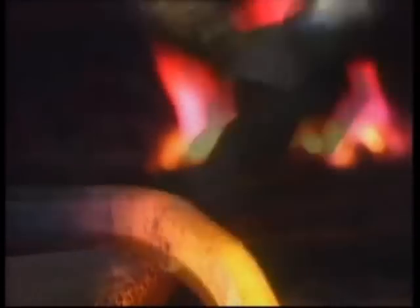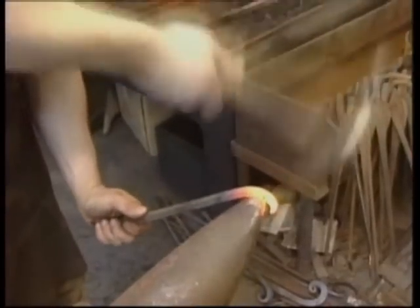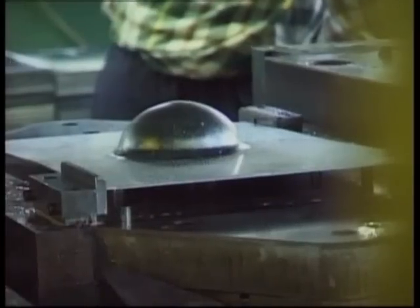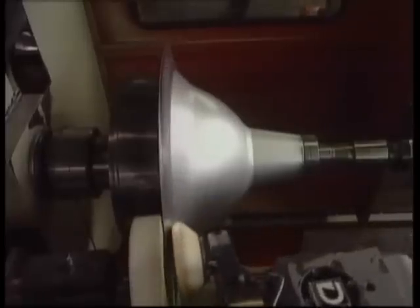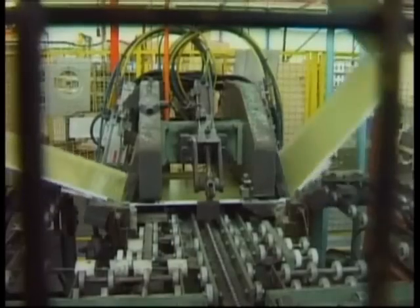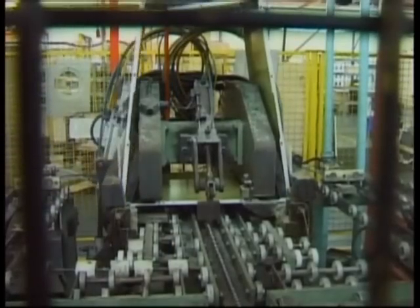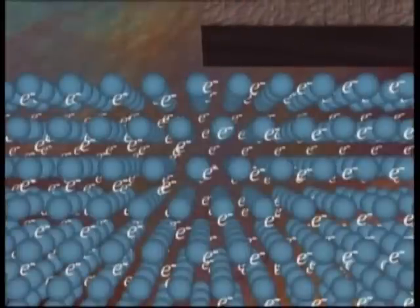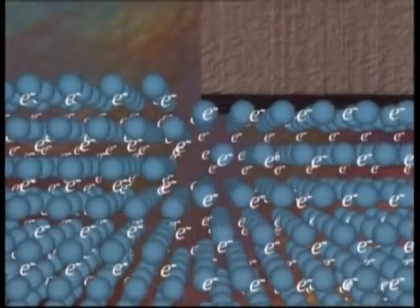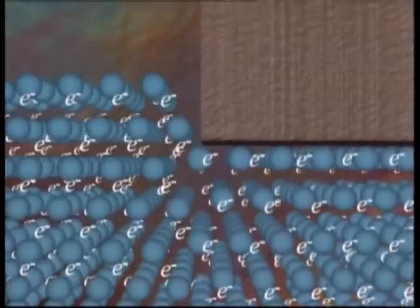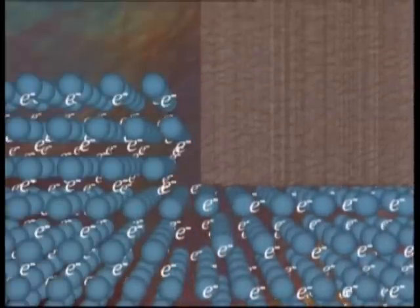The electron blanket allows the metal to be worked into different shapes. If the electrons were fixed in position, the metal would not yield as easily as this. Under a load, the ocean of electrons can move easily, allowing the atoms to rearrange themselves.